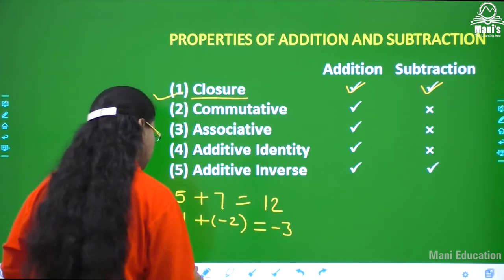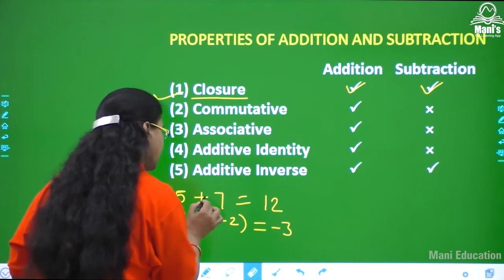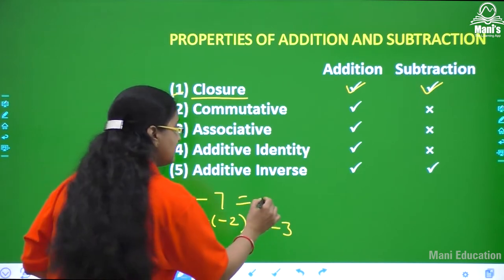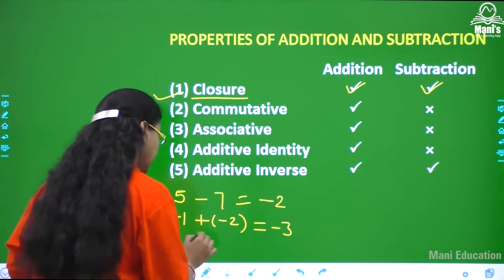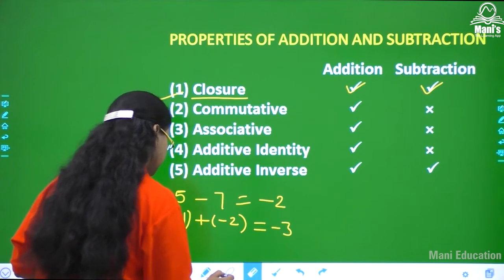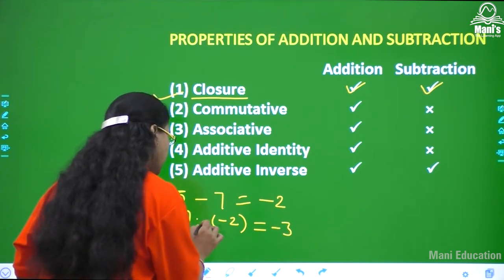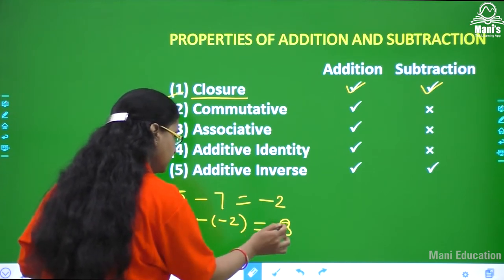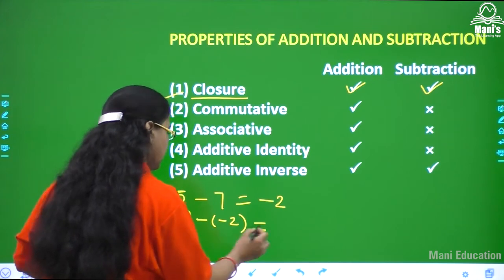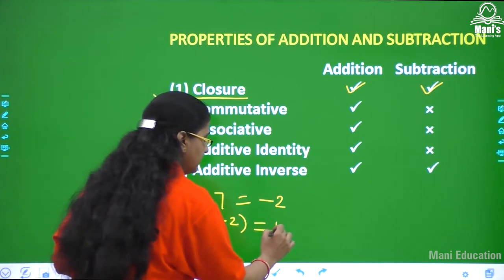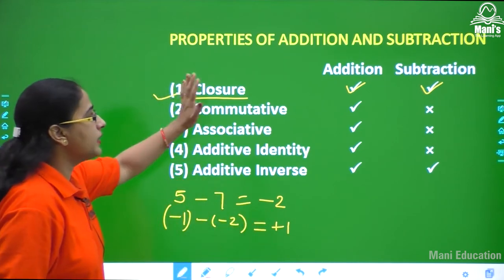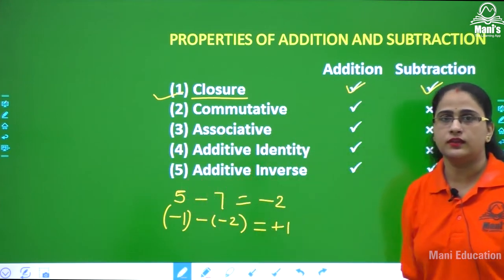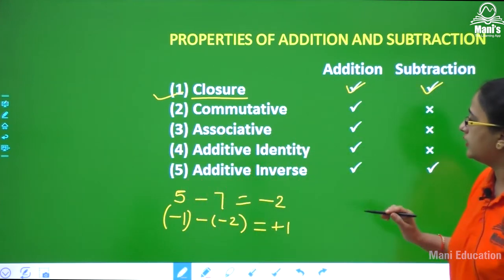In case of subtraction also, we check: minus 5 minus 7 equals minus 2, and minus 1 minus 2 gives us an answer. What we conclude is that the closure property, whether in addition or subtraction, will be followed. You can easily observe that it is being followed.